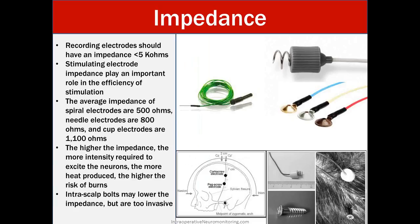Impedance. Recording electrodes should have an impedance less than 5 kiloohms. Stimulating electrode impedance plays an important role in the efficiency of stimulation. The average impedance of the spiral electrode or those corkscrew electrodes are 500 ohms. Needle electrodes are around 800 ohms and the cup is around 1100 ohms. The higher the impedance, the more intensity required to excite the neuron. The more heat produced, the higher the risk of burns. Intrascalp bolts may lower the impedance but are too invasive. So actually in Japan they use these bolts that just look like home depot screws and they're pretty much penetrating into the bone itself. Decreasing the impedance and you can have lower intensity, but at what cost? Same with the corkscrews. Those have a lower impedance as well.